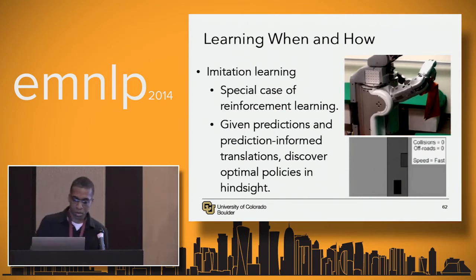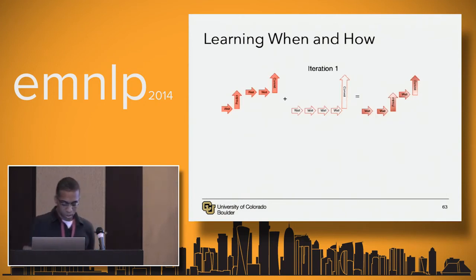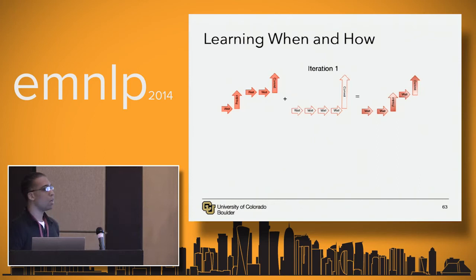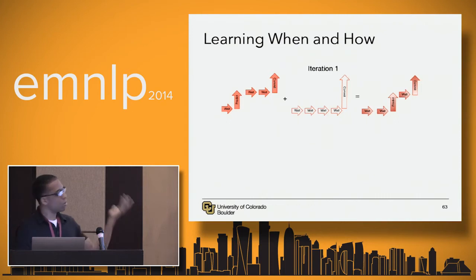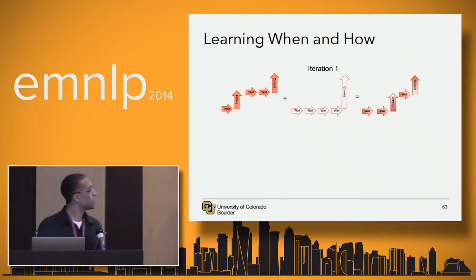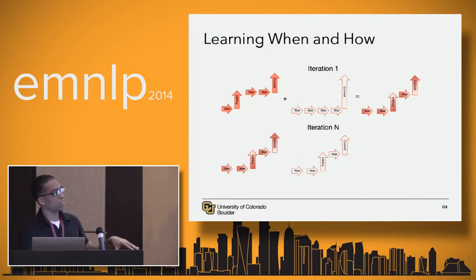We use imitation learning. Given our predictions, we discover optimal policies in hindsight. One problem that often comes up in apprentice-teacher situations is that the teacher is too good — the optimal policy does exactly what it should, but our learning policy is naive. This is hard to learn from if the optimal policy is never in the situations the learning policy encounters. So we interpolate between these policies to explore the state space and learn from a policy in situations like what we'll actually be in.